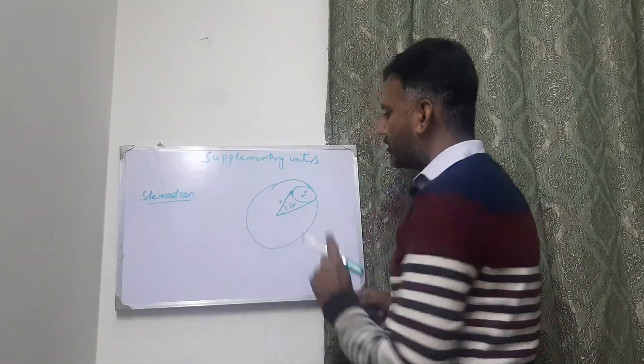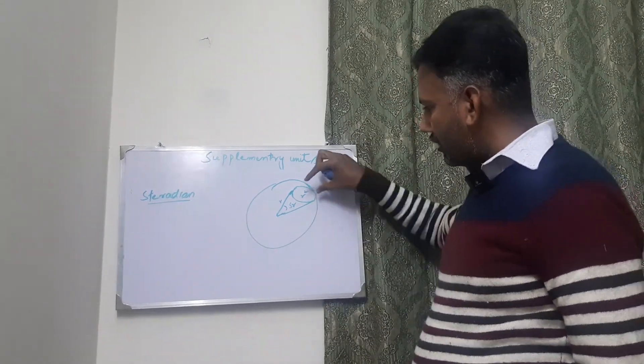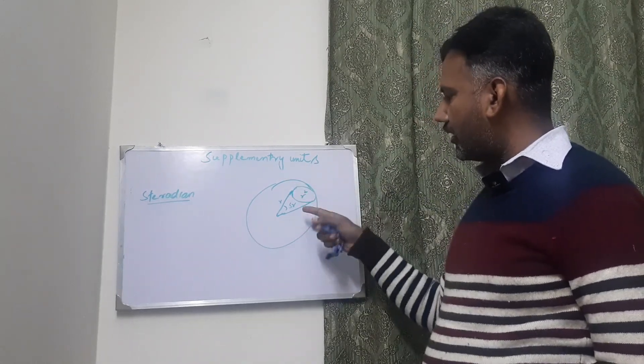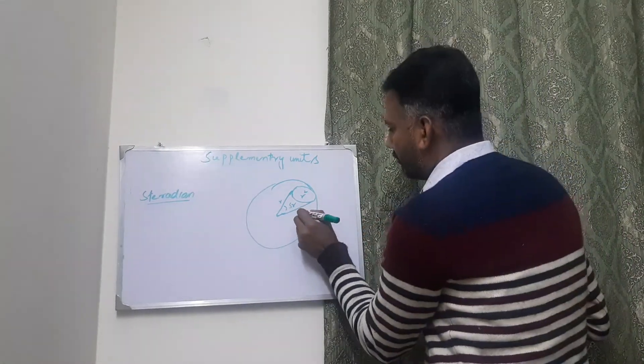It is the angle subtended at the center of a circle by an area of a surface equal to the square of the radius.